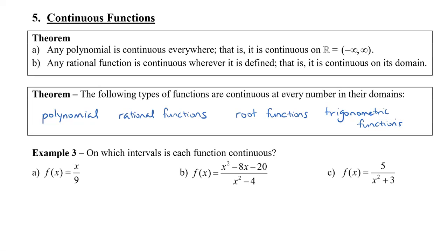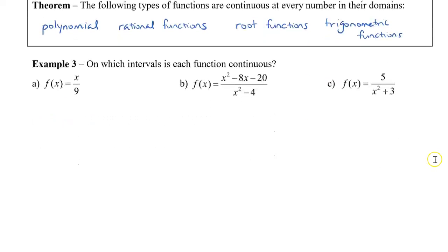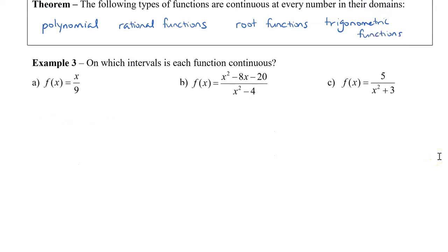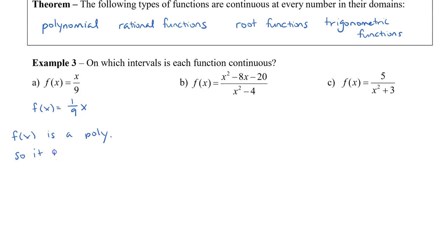Here's a look at three of our functions. All of them look like they're rational. If you take a look at the first one, I can actually rewrite this as f of x equals one-ninth x. So this actually is a polynomial. We can say that f of x is a polynomial, and it is continuous on all the real numbers, or from negative infinity to infinity.